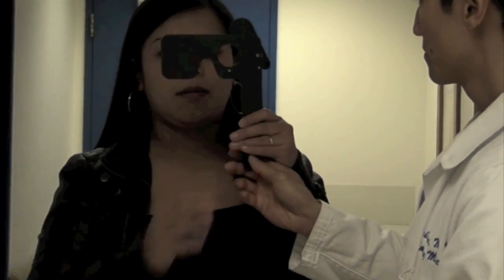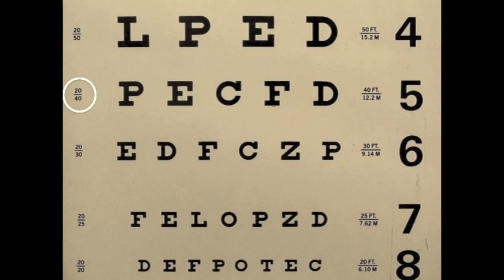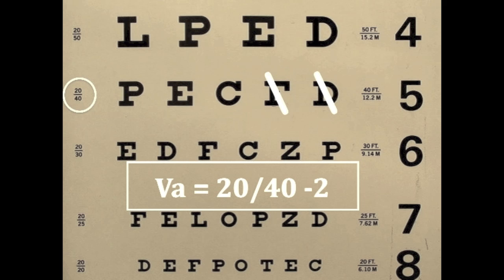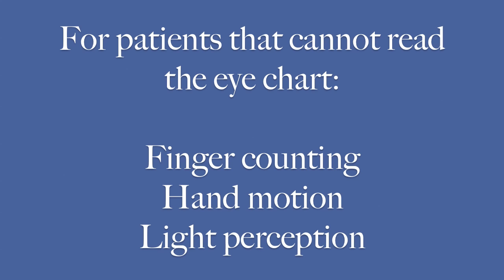If the patient misses only a few letters of a row, you can denote this with a minus. 20/40 minus 2 indicates that the patient was able to read all but two of the 20/40 line on the eye chart. If the patient cannot read any letters of the eye chart, you should evaluate visual acuity with finger counting, hand motion perception, and light perception.